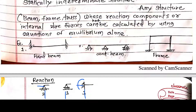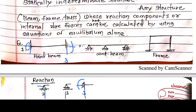For the fixed beam — 3 reactions at first fixed support and 3 reactions at second fixed support — that is 6 reactions total, and equations available are only 3. To calculate 6 unknowns we need 6 equations, but available equations are only 3. So how many extra equations are required? We need 3 extra equations. That 3 is the degree of static indeterminacy.